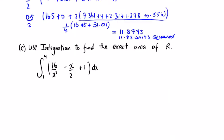Part C, you're asked to use integration to find the exact area of R. So it might be easier just to write the x squared on top here. 16x to the minus 2 minus, well, that's going to be a half x. So we're going to put the number in plus 1. And we're integrating that between 4 and 1.